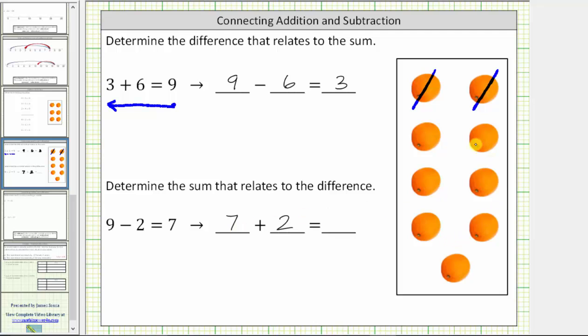Now if we go back over to our model, if we begin with seven oranges, which are here, and then instead of removing these two oranges, we add these two oranges, we can see once again, the result is nine oranges.